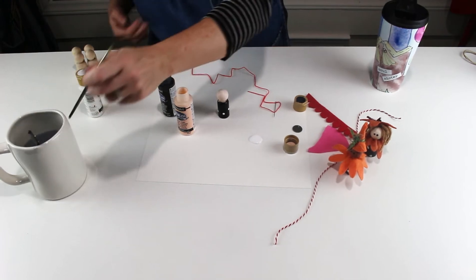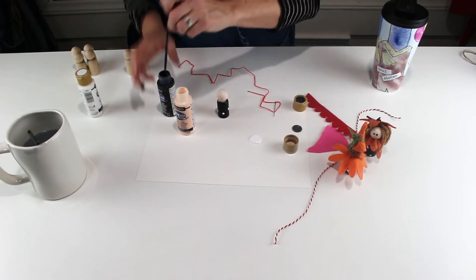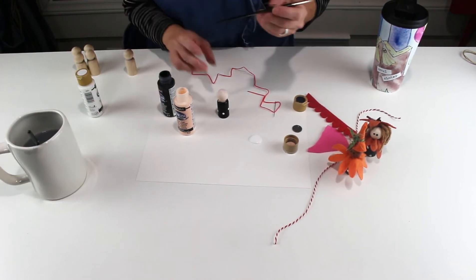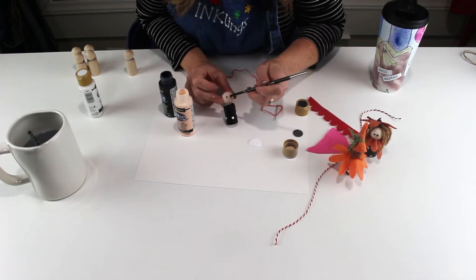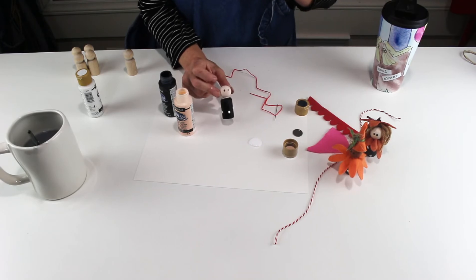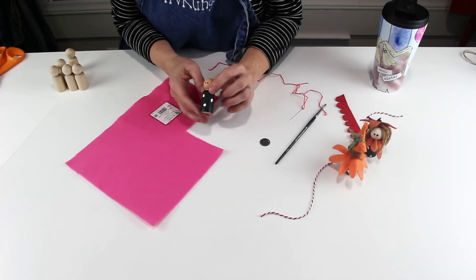To do the eyes, you do the same thing. I'm going to rinse that brush again. I'm going to grab a little bit of black on the end and I'm going to give him two little dots for eyes.